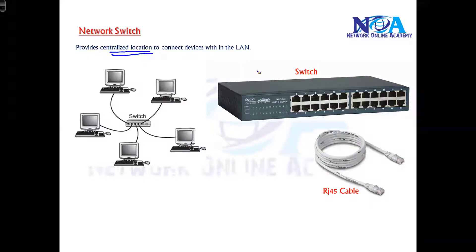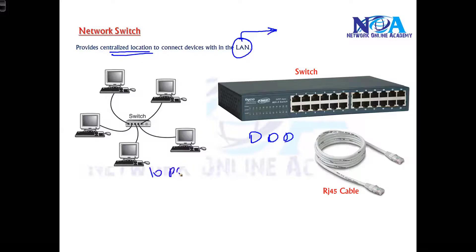As we discussed about the local network, in the local network we have computers — here you can see all the computers. Let's say I have 10 PCs and I want these 10 PCs to be able to exchange information between them. Without connecting them that is not possible, so they can only exchange information when you connect them.